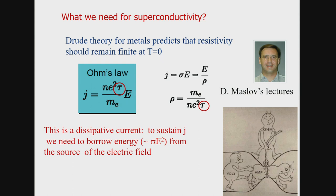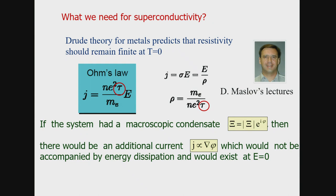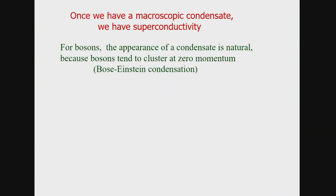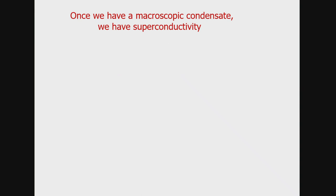This is dissipative current — to sustain current you need to borrow energy from the source of electric field, so if you put the electric field to zero, the current stops. But it has been known, before the theory of superconductivity came in, that if the system of a macroscopic number of particles is described by a single macroscopic wave function — meaning infinite number of particles in the same quantum mechanical state, called a condensate — then this condensate wave function has amplitude and a phase. Using the quantum mechanical formula for current, you find a current proportional to the gradient of the phase, with no energy dissipation, giving zero resistivity.